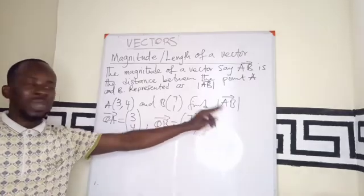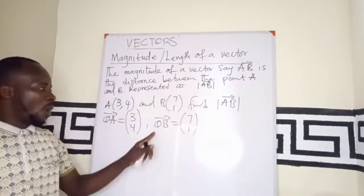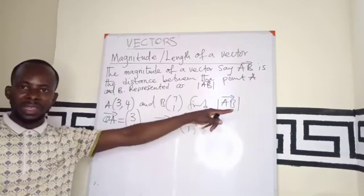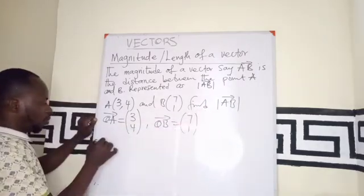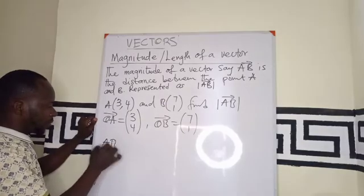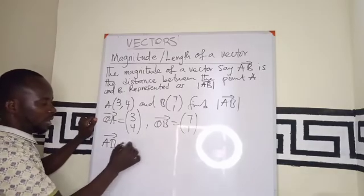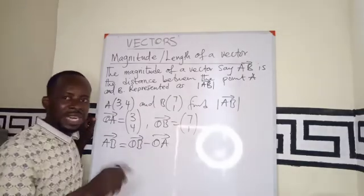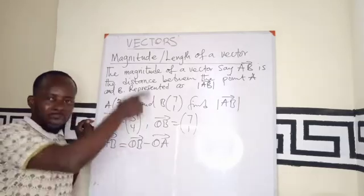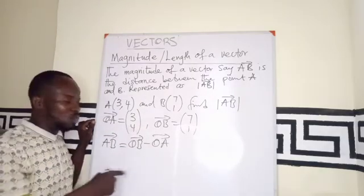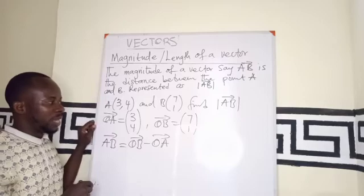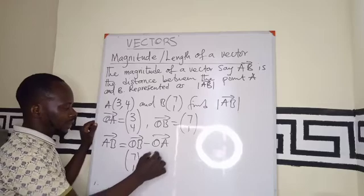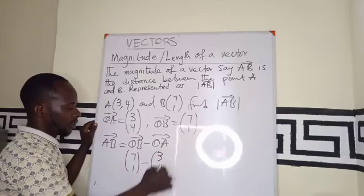Now, to write this as a vector, we can go direct, or we can still find the position vector of AB. For example, this, we know that position vector of AB is going to be the OB minus OA. That is, if I want to find the magnitude, as we did on the diagram, the X1 minus X2, I can follow this procedure. Where I have this to be 7, 1 minus 3, 4.